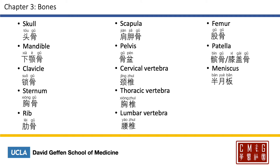Here are some terms for the bony anatomies. Skull is 头骨; the mandible 下颌骨; clavicle 锁骨; and the sternum 胸骨 — remember that 胸 means the chest. Rib will be 肋骨; the scapula 肩胛骨. The pelvis will be 骨盆; 盆 meaning a basin. The cervical vertebra will be 颈椎; 颈 is a formal name of the neck. The thoracic vertebra will be 胸椎, and lumbar vertebra 腰椎. Femur is 股骨. The patella is colloquially called 膝盖骨, but formally called 髌骨. Meniscus will be 半月板.